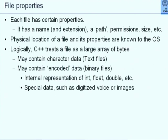We now come back to the discussion on files — this is a recap of a few things we discussed last time. A file has certain properties: it has a name, an extension, a path, permission, and size. What is size? Total number of bytes which are recorded in the file. You can see all of these on Ubuntu by saying ls or ls -l. You will also get when the file was created, modified, and a lot of other information. All this information is maintained by the operating system. The physical location of the file and its properties are known to the operating system — you do not know them directly.